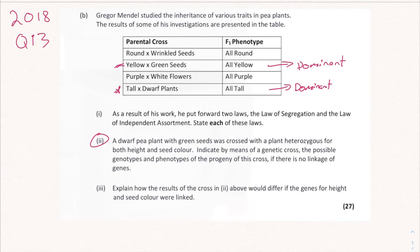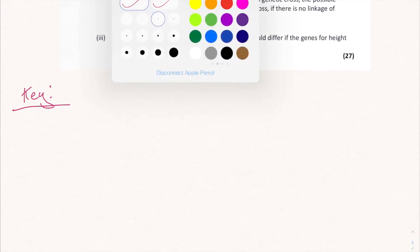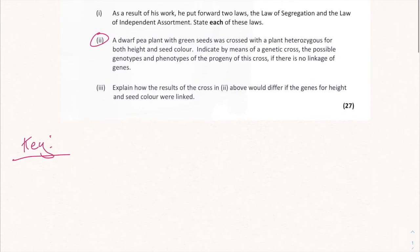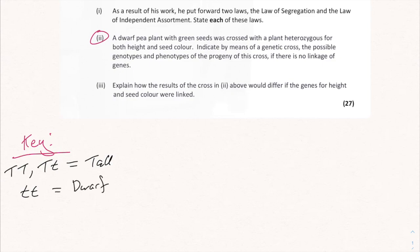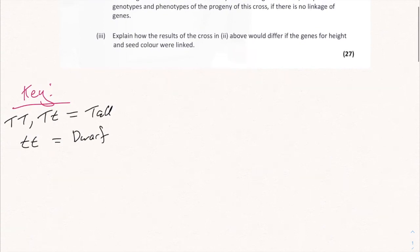I can't stress how important keys are in genetic crosses — students who don't write out the keys will have problems later on. So: tall is dominant, we use two capital T's for homozygous tall, capital T lowercase t for heterozygous, and two lowercase t's for dwarf. For seed color: two capital Y's or capital Y lowercase y for yellow, and two lowercase y's for green.